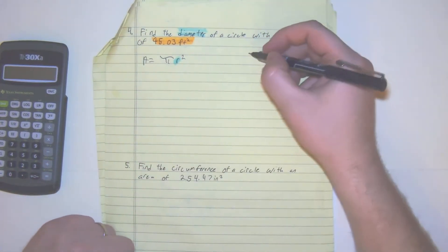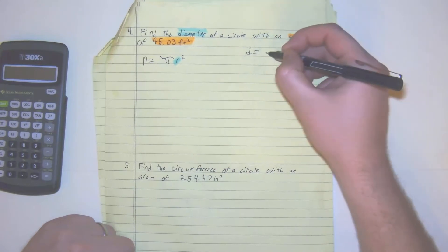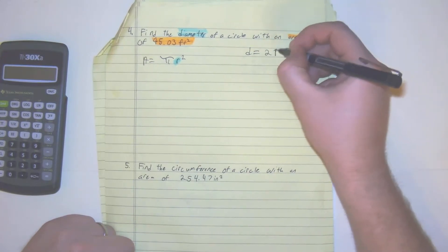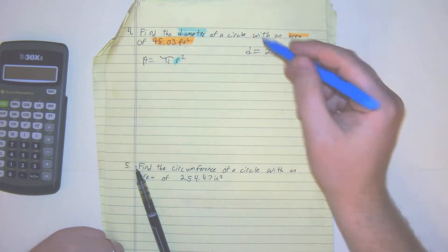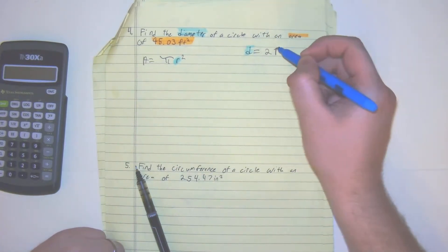But at the end, we would have to do diameter is equal to 2r. That's an r. Almost a 2 pi r. So our diameter will equal 2 times the radius.